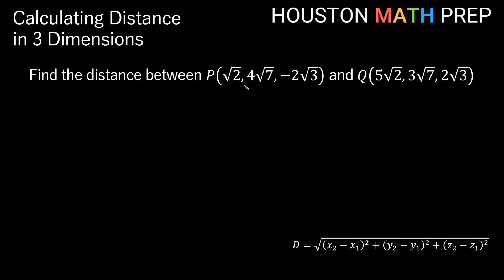Looking at one last one here with some radicals in the coordinates, we want to find the distance between P which is √2, 4√7, -2√3. So that's my x1, y1, and z1 for my formula. And our point Q is 5√2, 3√7, 2√3. So this is our x2, y2, z2. And so we'll start writing our distance formula here. So our distance formula is going to be the root of x2 minus x1, which is 5√2 minus √2, all of that squared,